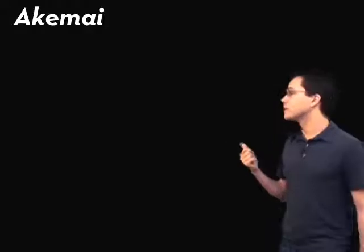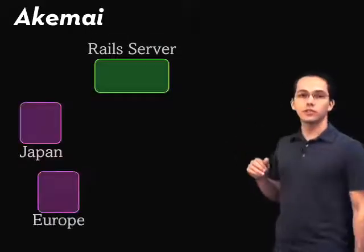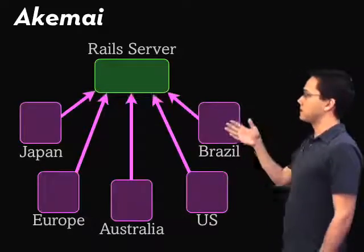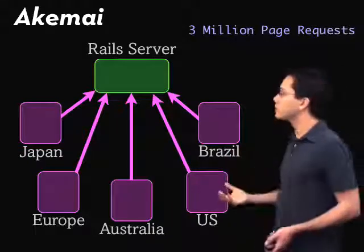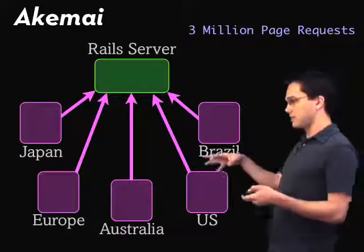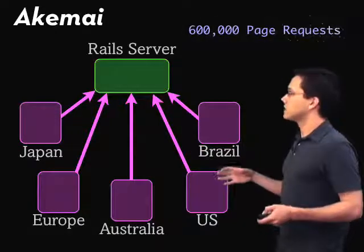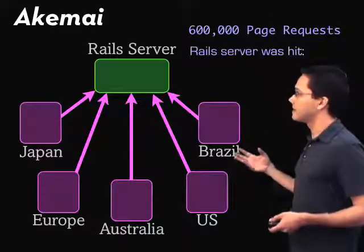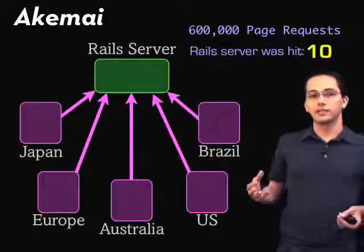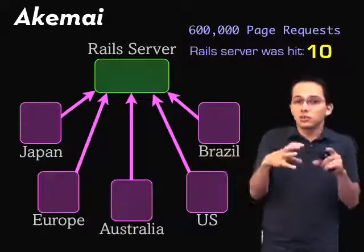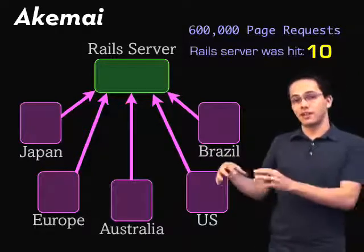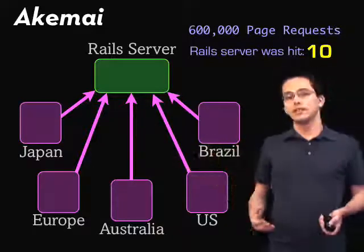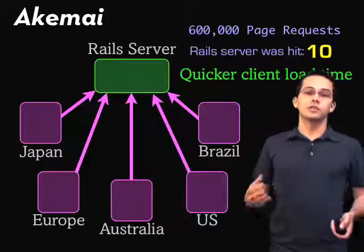The company Akamai does reverse proxy caching for you. They have servers all over the world — basically reverse proxy servers — in Japan, Europe, Australia, and the US. If we had the same three million page requests from all over the world, each proxy server might serve around 600,000 requests, meaning your Rails server would only get hit about 10 times. Each server around the world can still check back to your local Rails server to verify ETags, while serving the majority of content out of their regional reverse proxy caches. This also gives quicker load times for users worldwide.